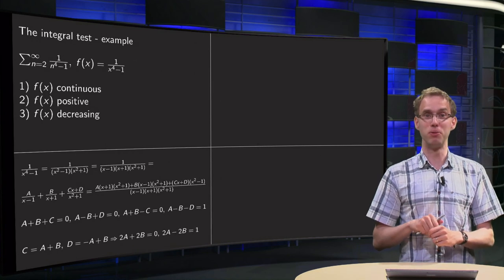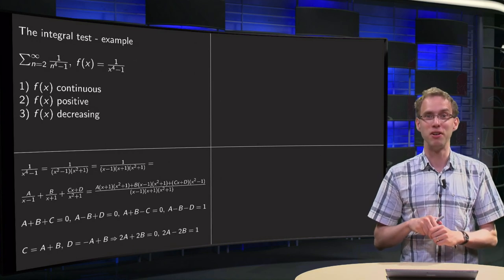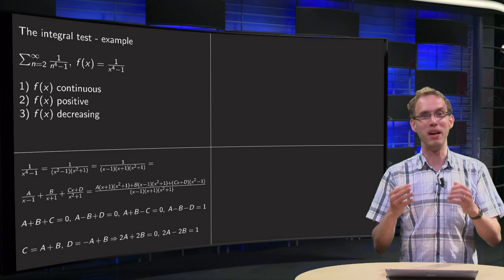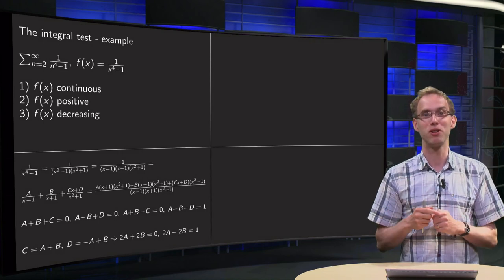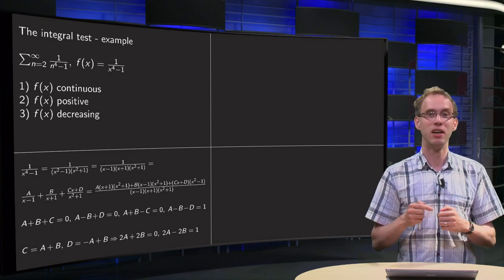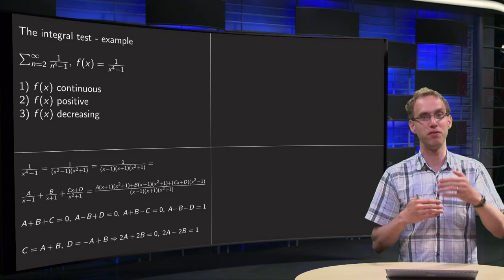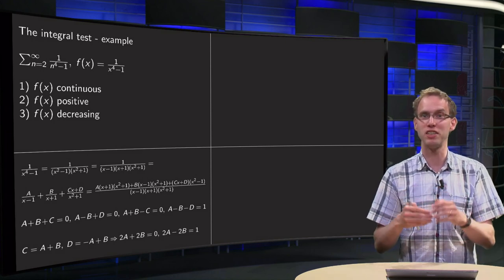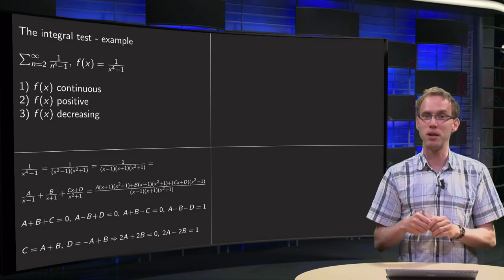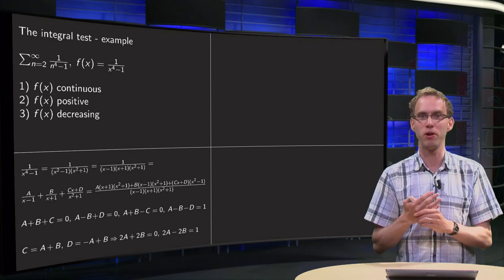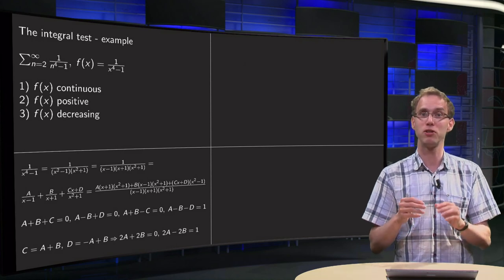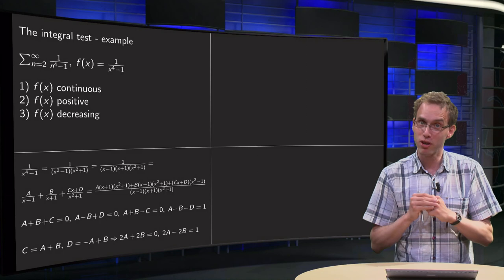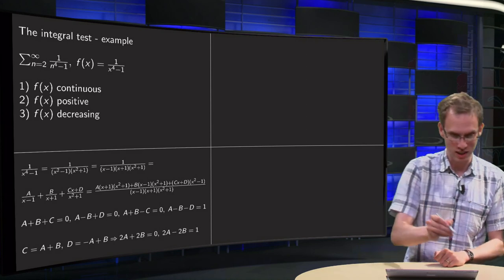But then we need to compute the antiderivative. It is a big antiderivative, so let's start to do the computation. You can always find antiderivatives of quotients of polynomials: just factorize them, separate the fraction, and integrate term by term. That is the plan — first we have to factorize.